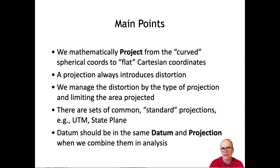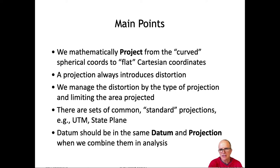We just can't avoid it — when we stretch that curved surface onto a flat surface, we end up bending or stretching or changing the shape, area, and direction on our map. We manage this distortion and keep it at acceptable levels by choosing different kinds of projections and by limiting the area over which we apply that projection.